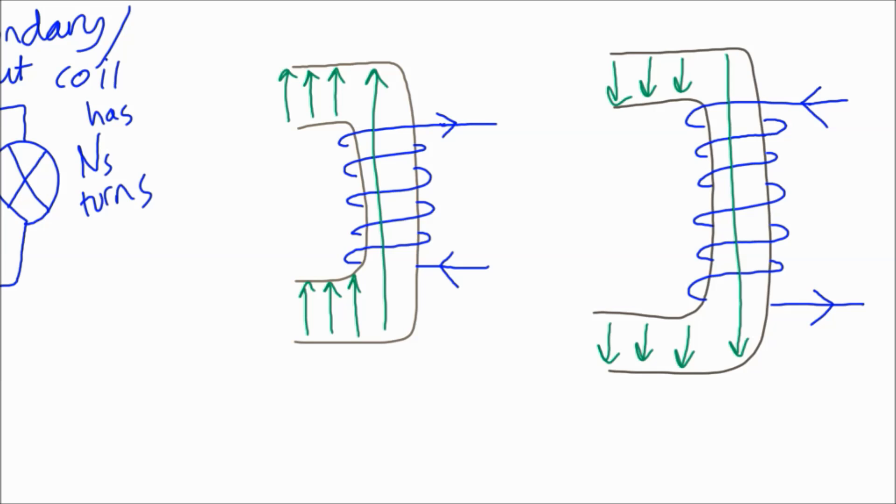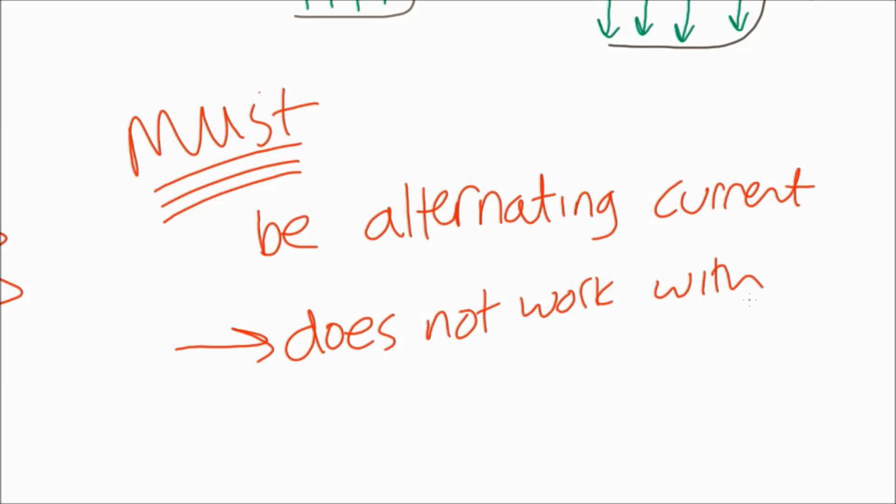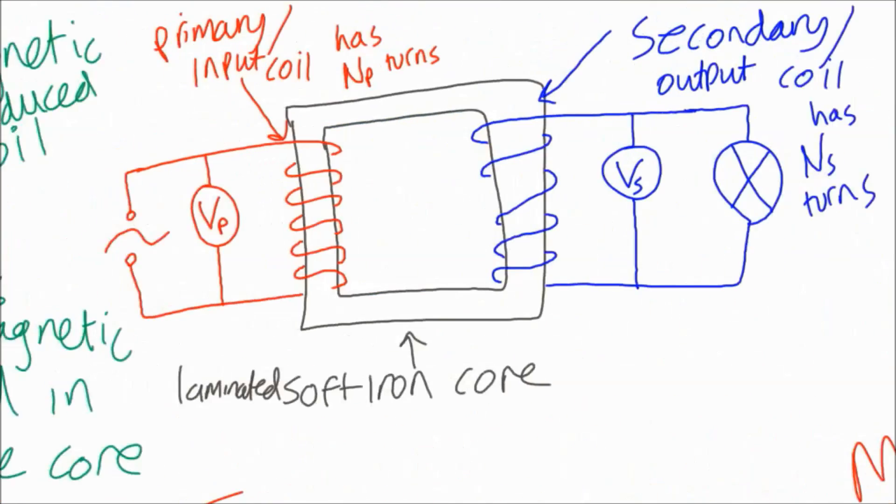Because we need that changing magnetic field, we must have alternating current. If you try and use it with direct current, because there's not a changing magnetic field, there's no induced current in the secondary coil.